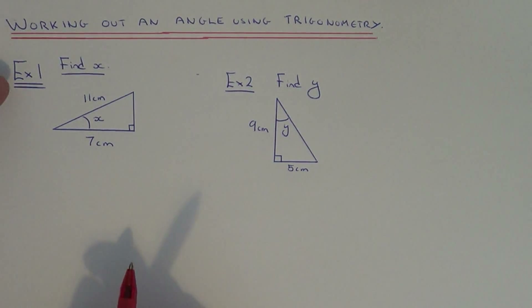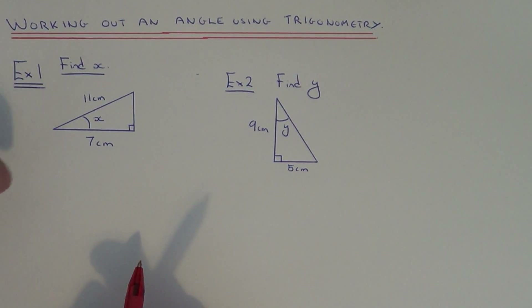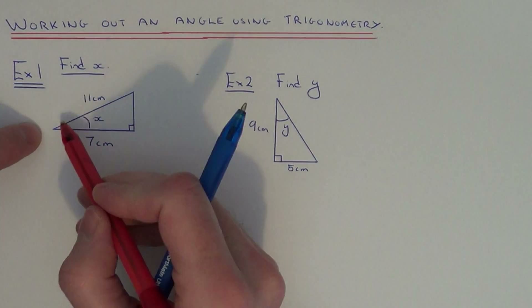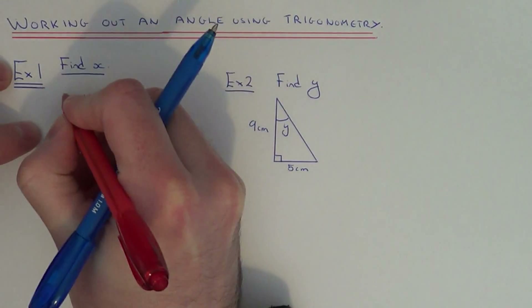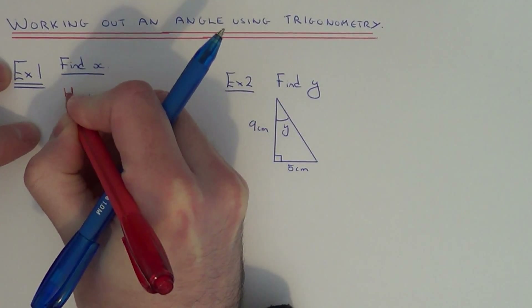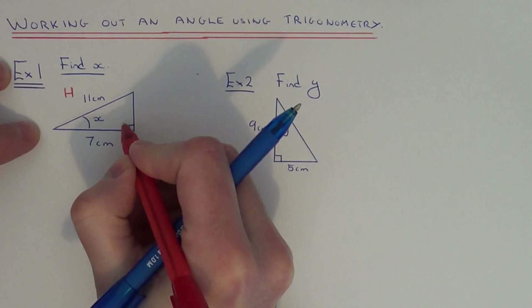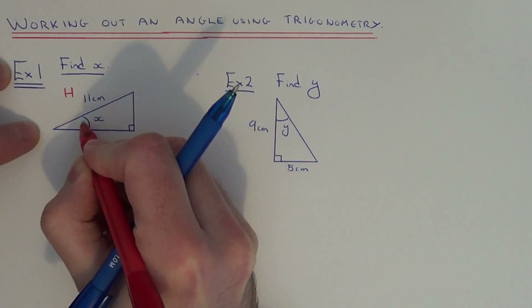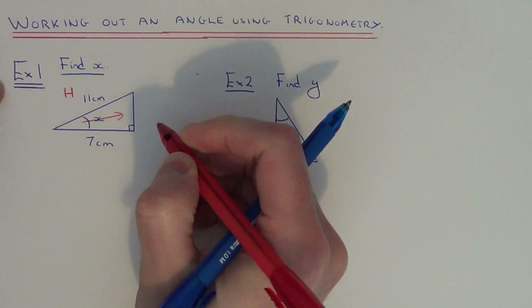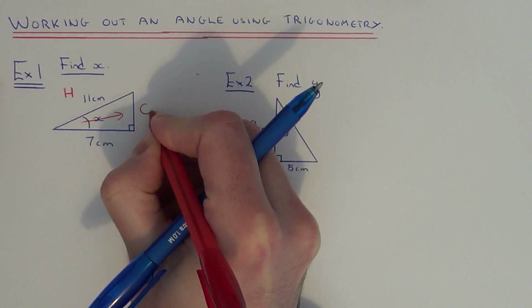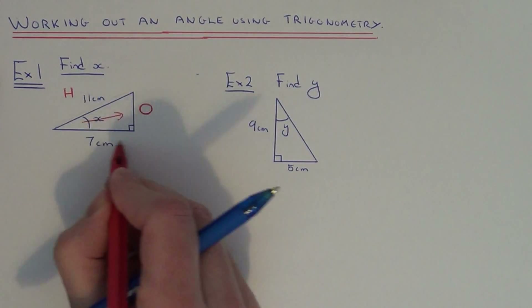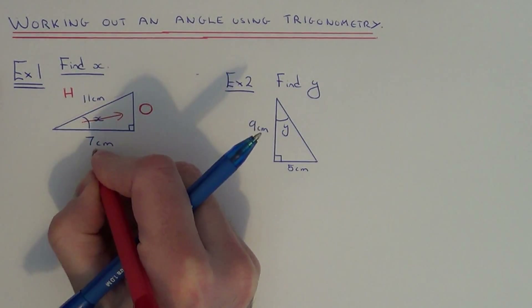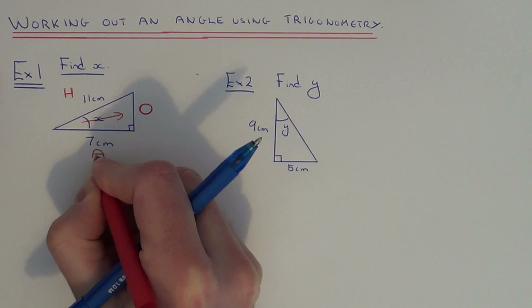So the first thing to do in example one is to label up our triangle. The longest side is the hypotenuse, so let's call that H. The side opposite the angle you're finding is called the opposite side, so let's call that O. And the third side is the adjacent side, let's call that A.